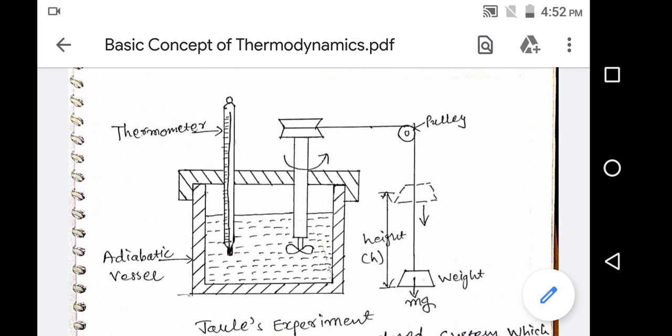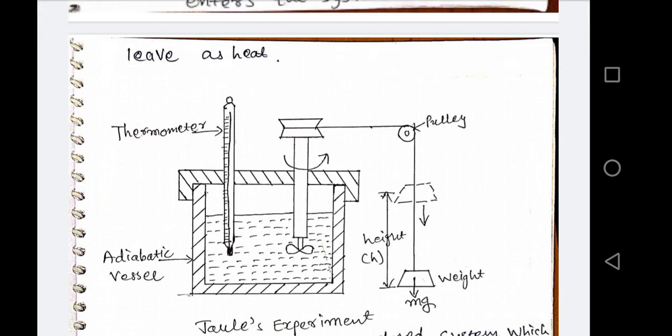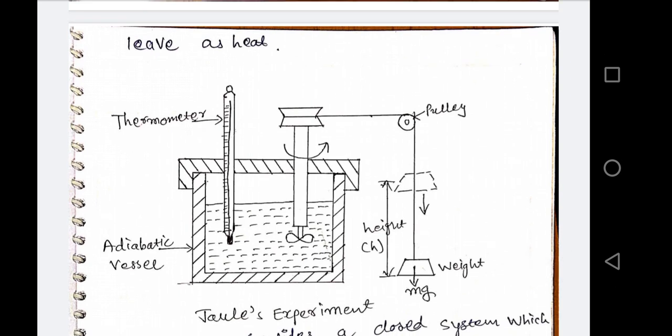When paddle work is provided to the water inside the vessel, the movement of water molecules increases. As the velocity of the water particles increases, their kinetic energy increases. These molecules collide with each other, exchanging energy, which causes the temperature of the water to rise. So when we provide work to the system, its temperature rises — meaning we are getting heat.